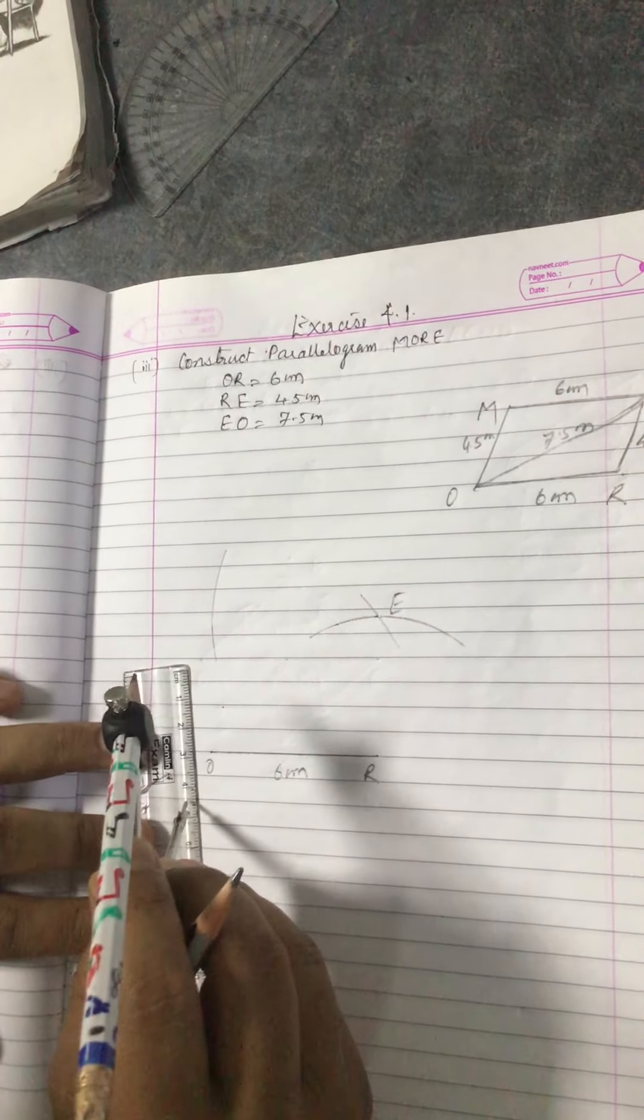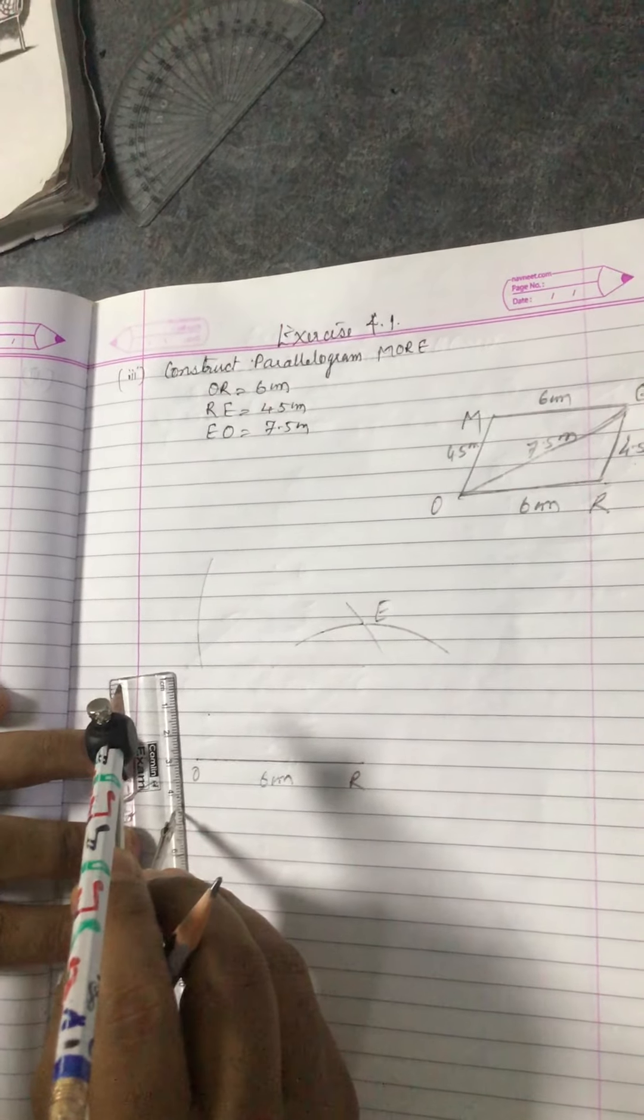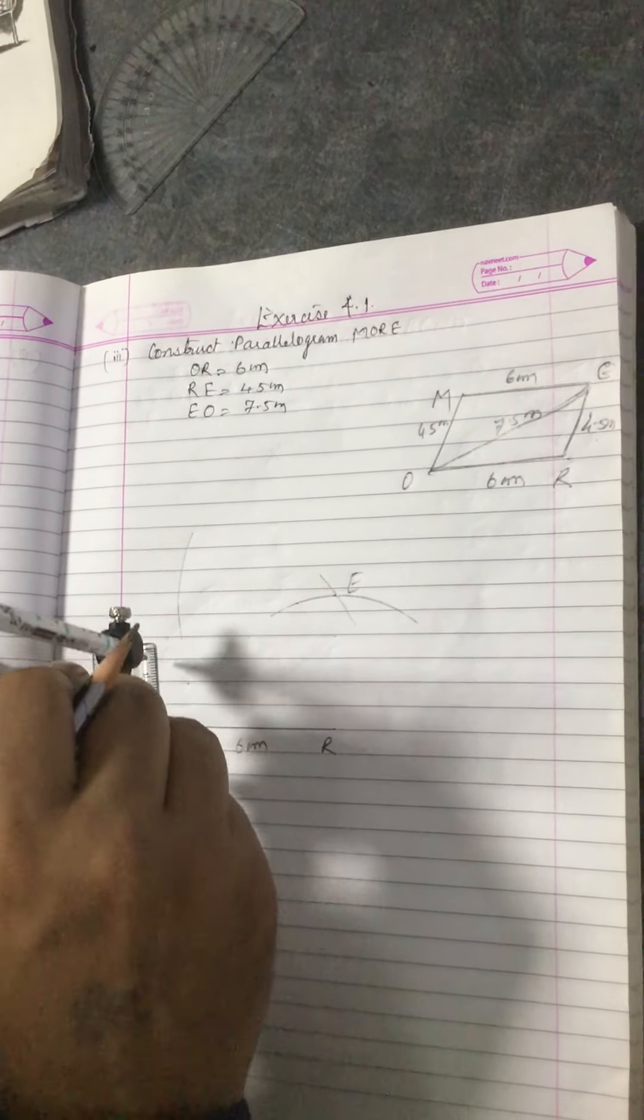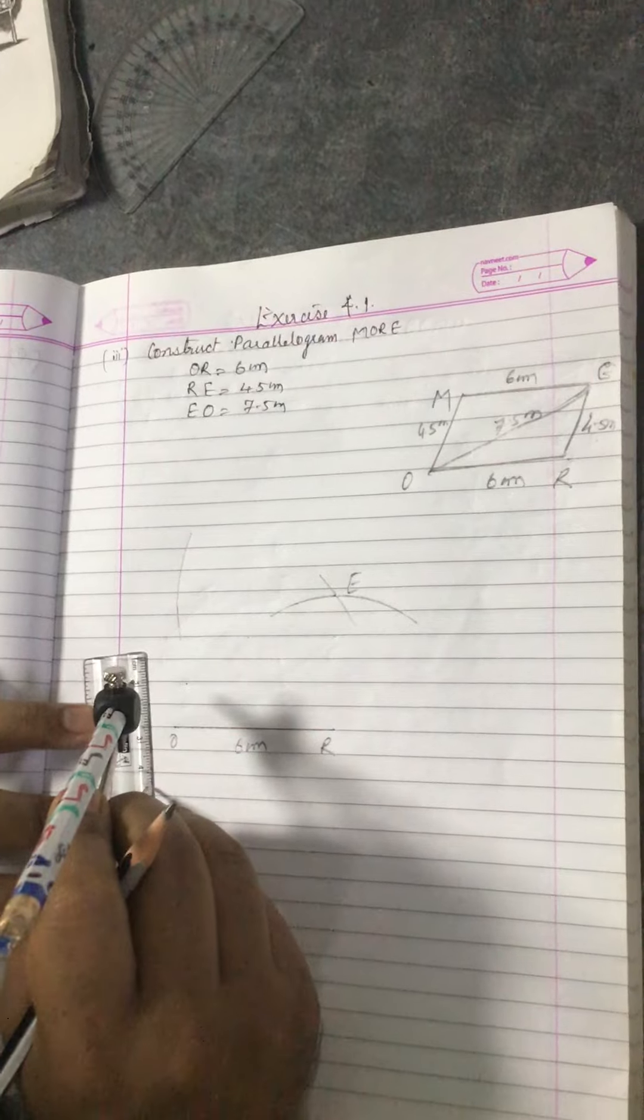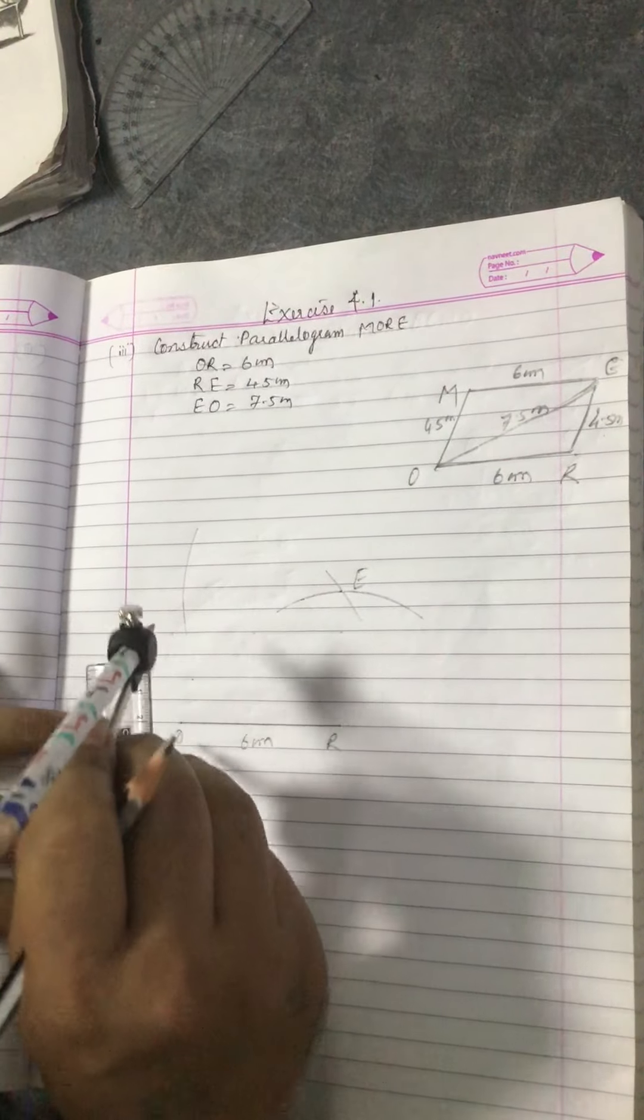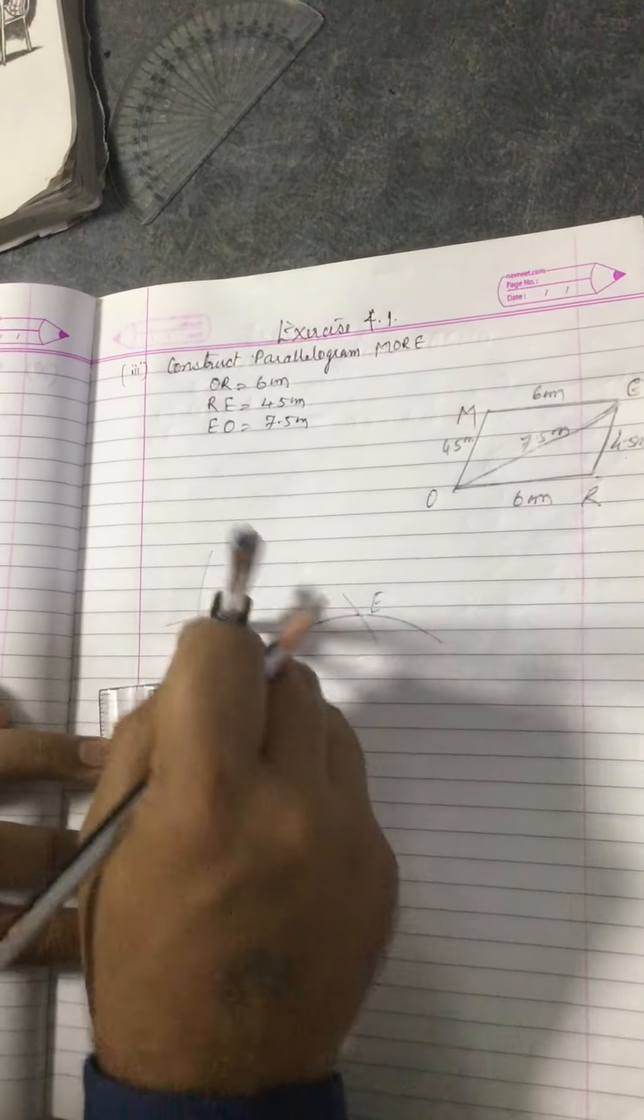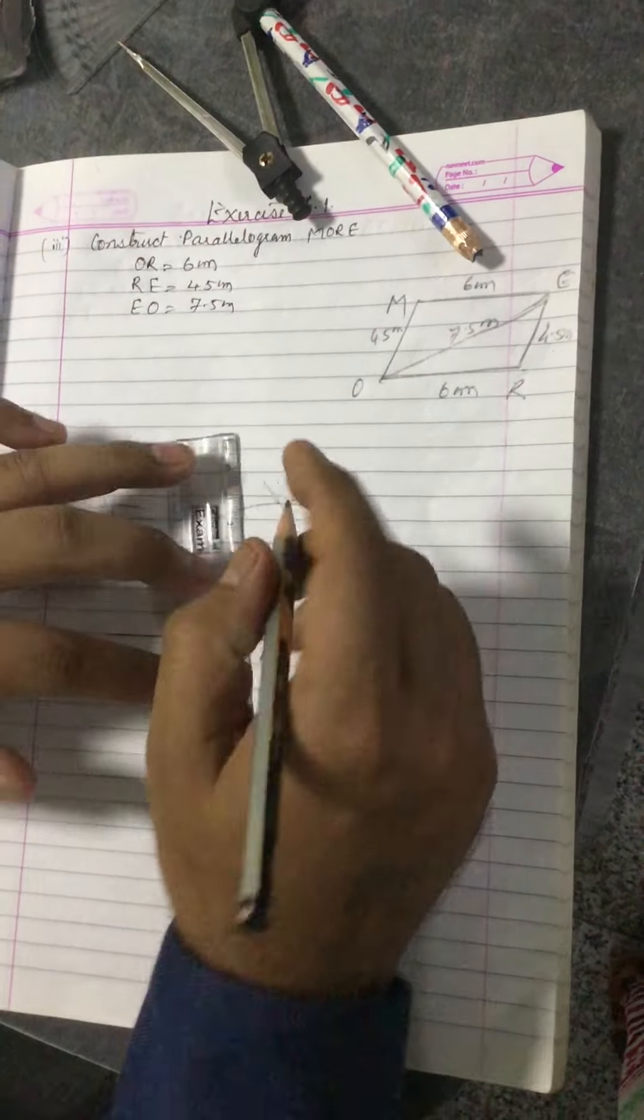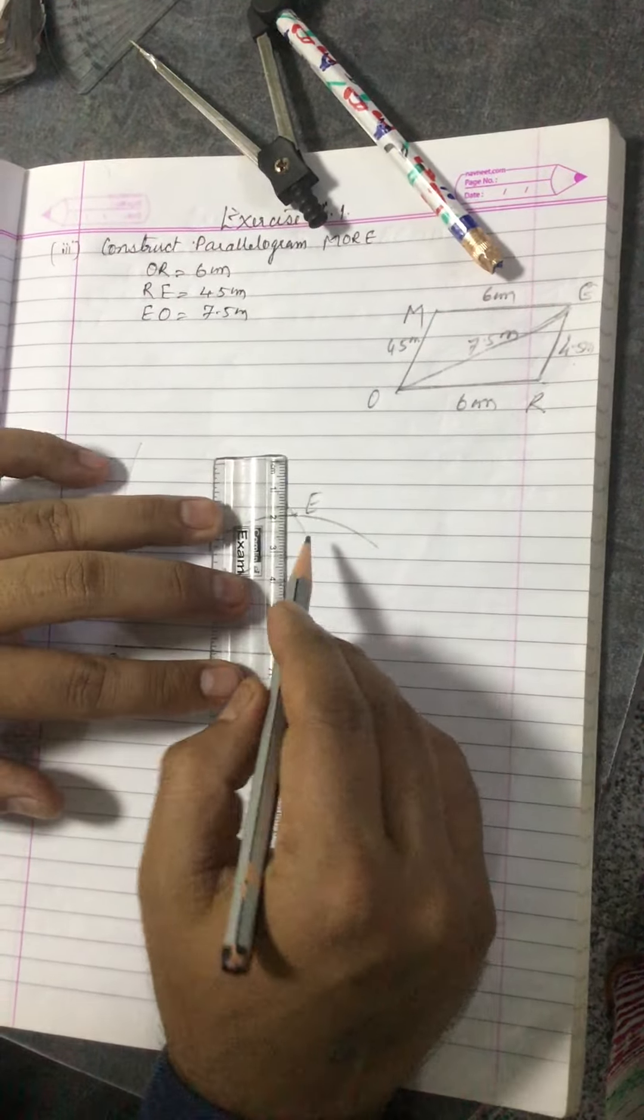MO is 4.5, so with O as center and radius 4.5, draw an arc which will intersect at M. So MORE is the required parallelogram. Join them.